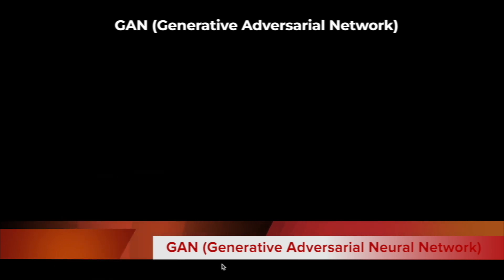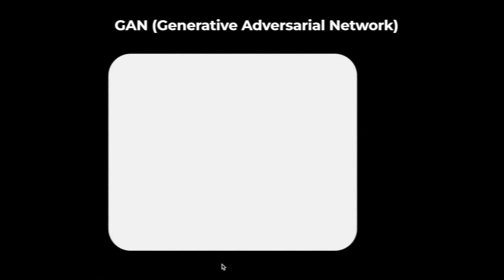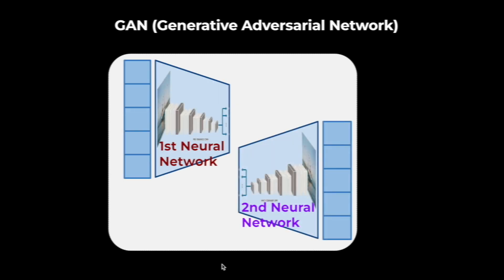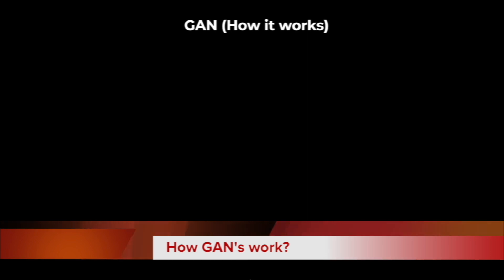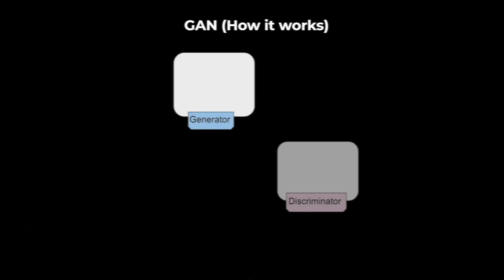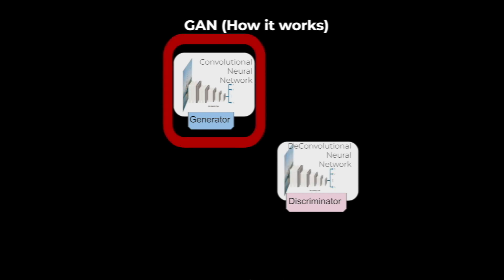A generative adversarial network is a machine learning model in which two neural networks compete with each other to become more accurate in their predictions. GANs typically run unsupervised and use a cooperative zero-sum game framework to learn. The two neural networks that make up a GAN are referred to as the generator and the discriminator. The generator is a convolutional neural network and the discriminator is a deconvolutional neural network. The goal of the generator is to artificially manufacture outputs that could easily be mistaken for real data.